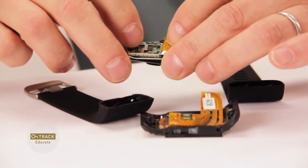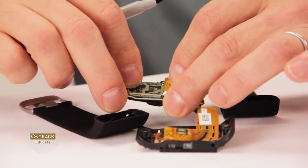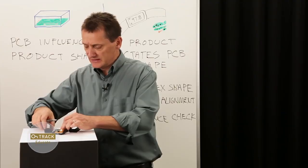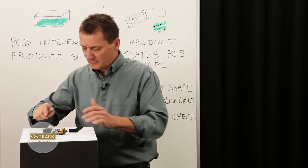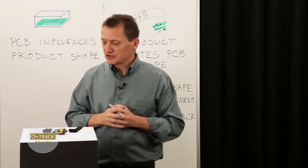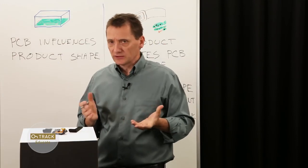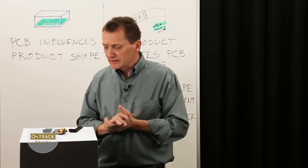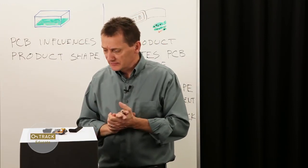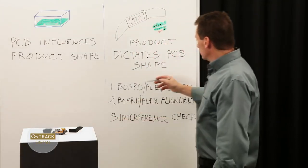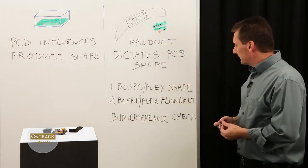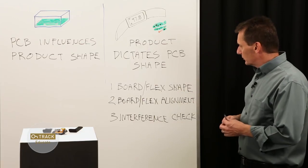So three printed circuit boards here, very compact. How do we go about this challenge of doing board layout and making something like this? So let's look at the challenges again. Board and flex shape, and board and flex alignment.